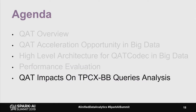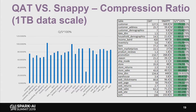Now let's analyze the QAT impact on TPC-XBB queries. Compared with Snappy, QAT's key advantage is higher compression ratio. The QAT compression algorithm is compatible with Zlib, and Zlib has a higher compression ratio than Snappy. However, CPU-based Zlib compression throughput is much slower than Snappy. With QAT hardware acceleration, you get the same compression ratio as Zlib but with much higher compression throughput than Snappy, achieving a better trade-off between compression ratio and throughput.